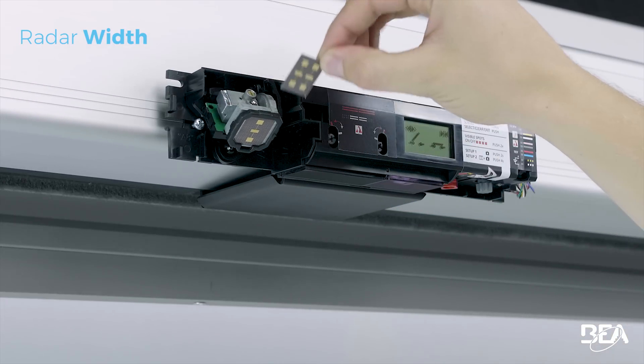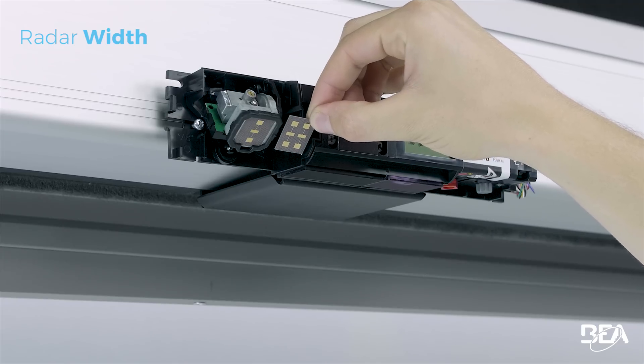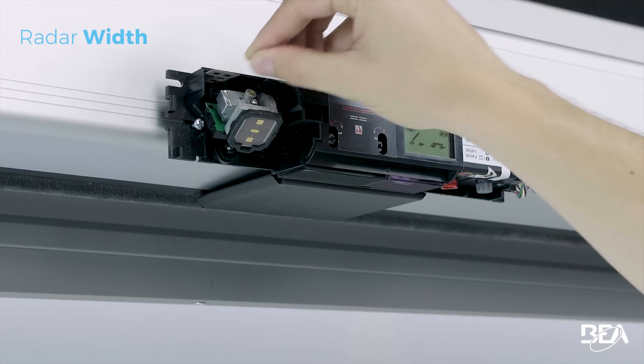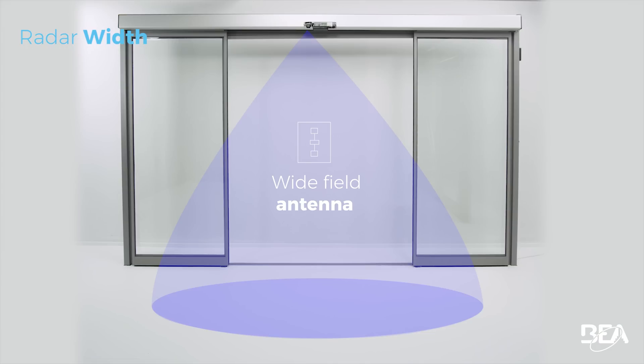By changing the antenna, you can modify the width of the detection field. Use the three-patch antenna for a wide field and the six-patch antenna for a narrow field.